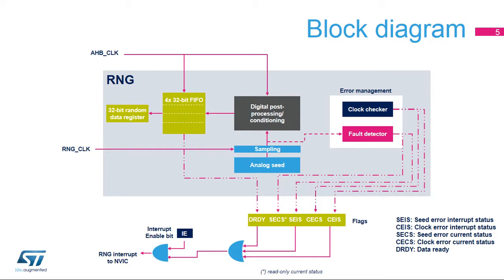The contents of the post-processing block are transferred into the data register through a four-word FIFO. The Data Ready flag, or DRDY, is triggered as soon as the FIFO is full and is automatically reset when no more data can be read back from the RNG.